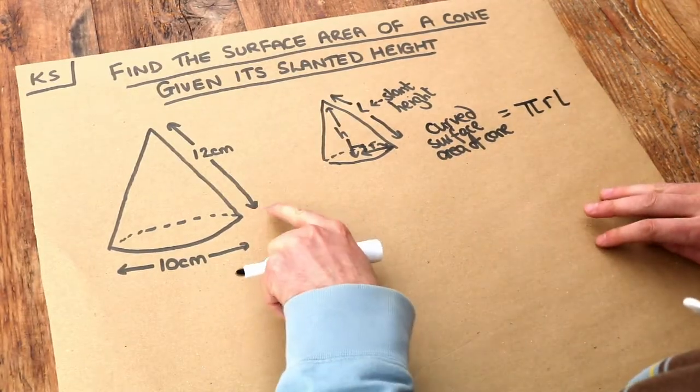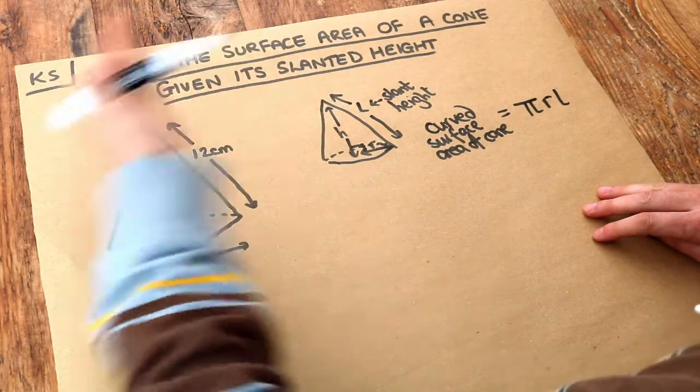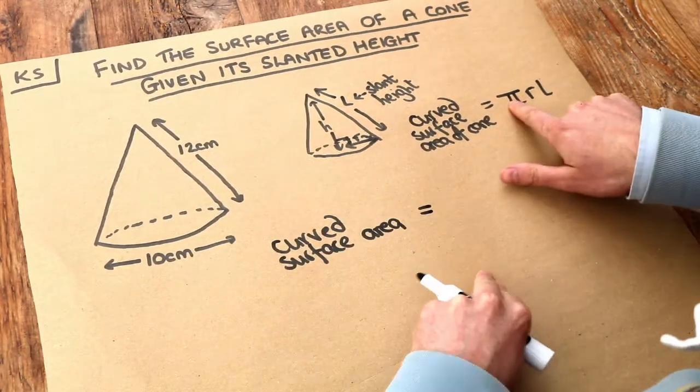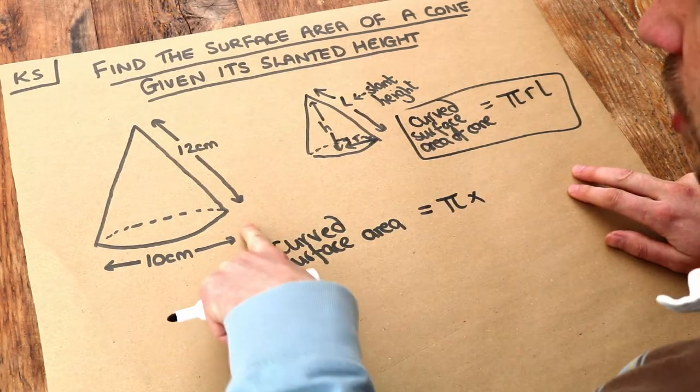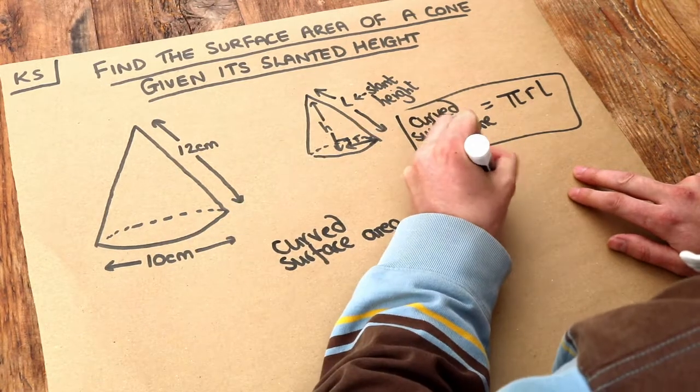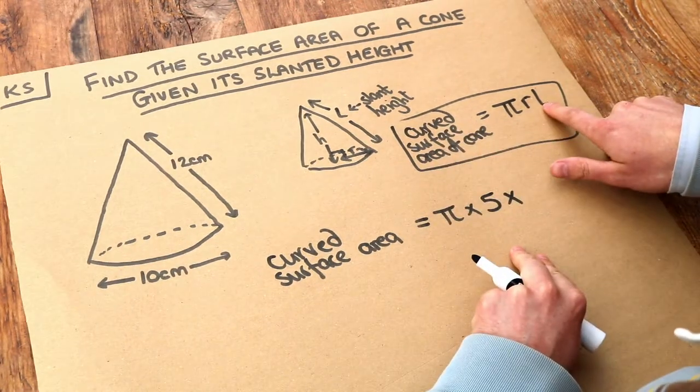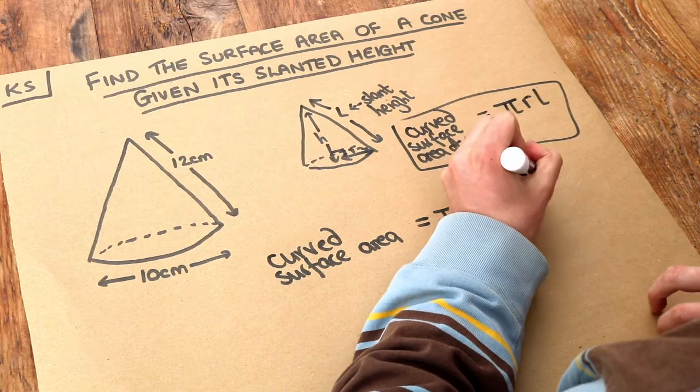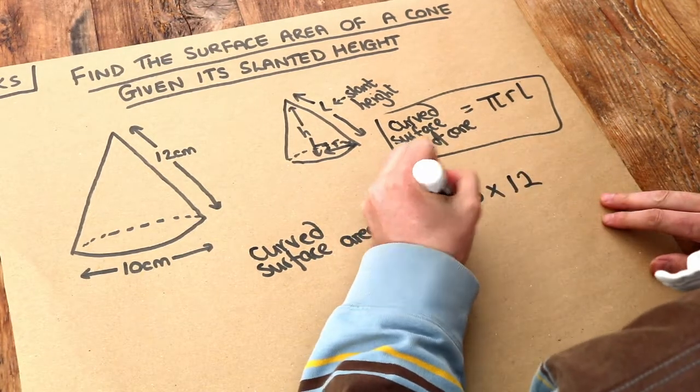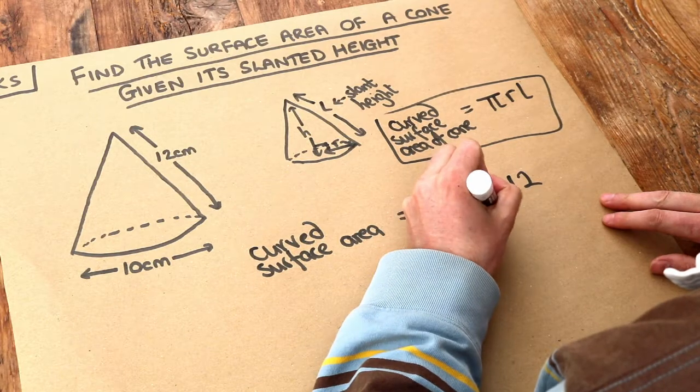Applying this to our example, the curved surface area is π times the radius. If the diameter is 10 cm, then the radius is 5, multiplied by the slant height of 12. This simplifies to 60π.